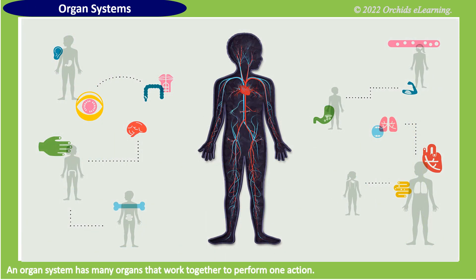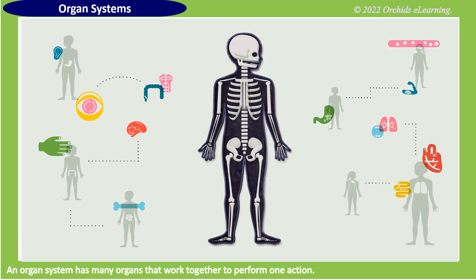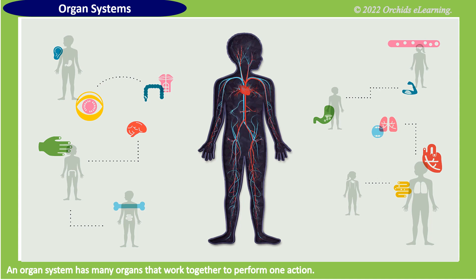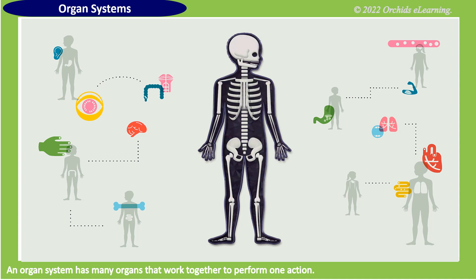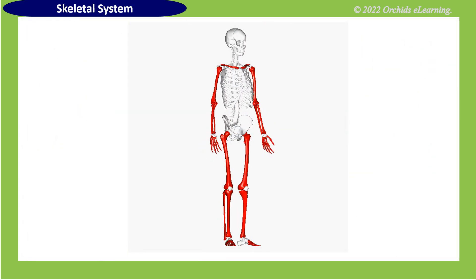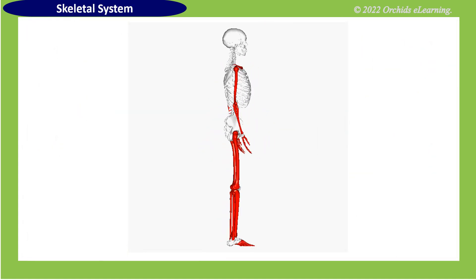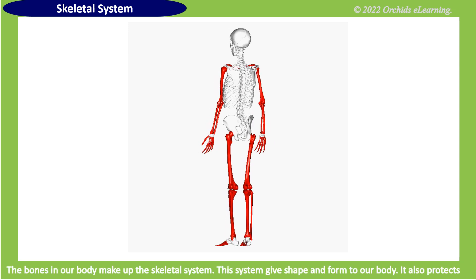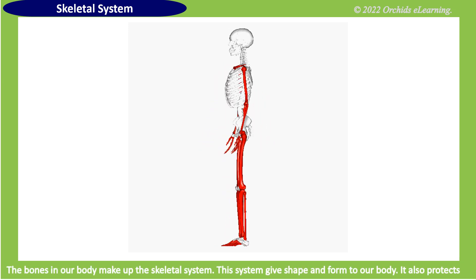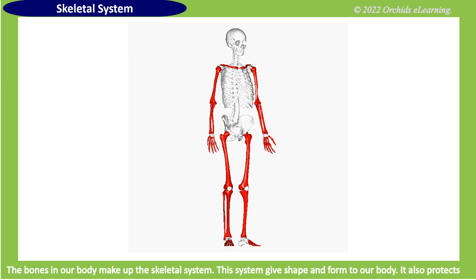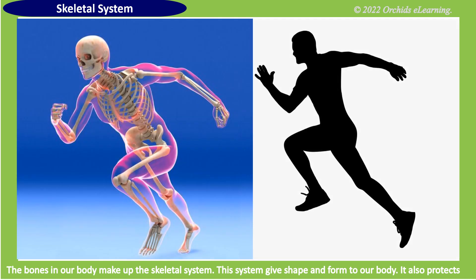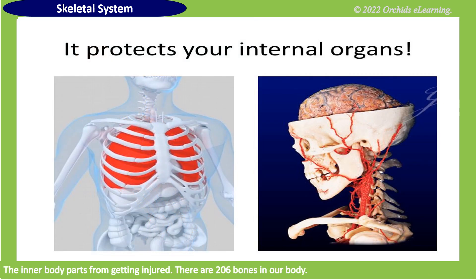An organ system has many organs that work together to perform one action. Skeletal system: the bones in our body make up the skeletal system. This system gives shape and form to our body. It also protects the inner body parts from getting injured.